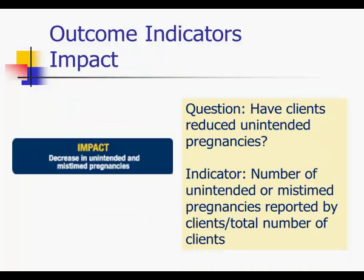Finally, for impact indicators, the question is: have clients reduced unintended pregnancies? The indicator would be the number of unintended or mistimed pregnancies reported by clients over the total number of clients.